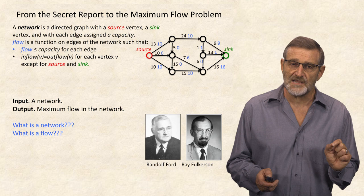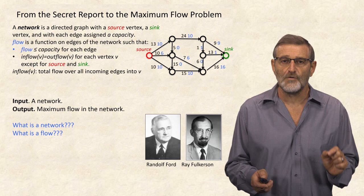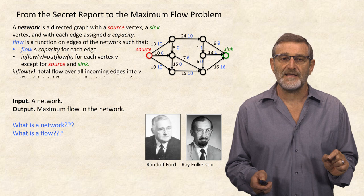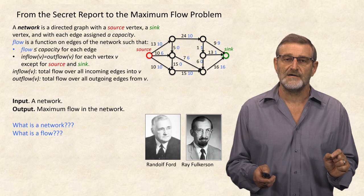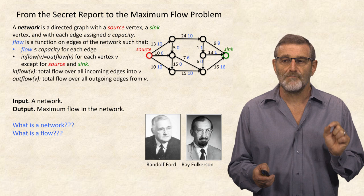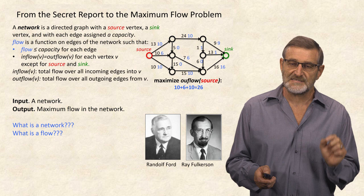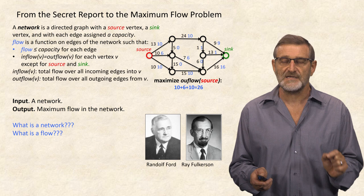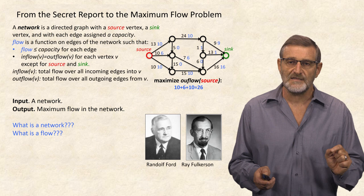Inflow is simply the total flow over all incoming edges into vertex V, and outflow is the total flow over all outgoing edges from vertex V. In this slide, capacities are shown in black and flows are shown in blue. The goal that Ford and Falkerson set up is to maximize outflow from the source vertex — in this case, the outflow from the source vertex is 10 plus 6 plus 10, equal to 26.